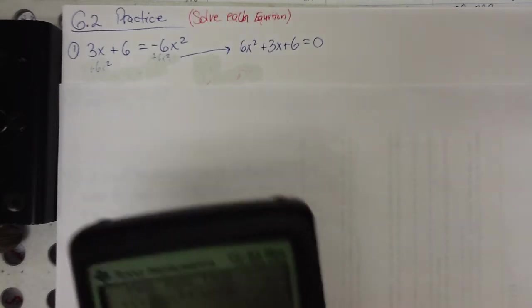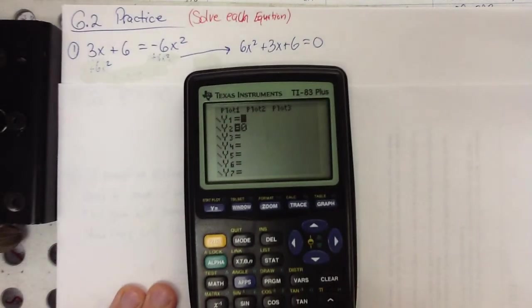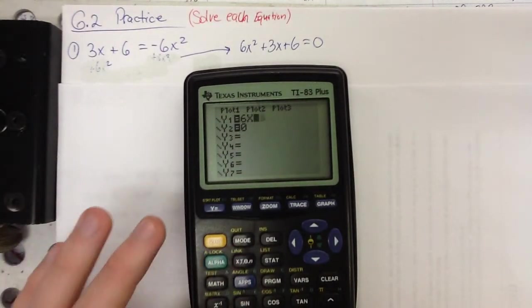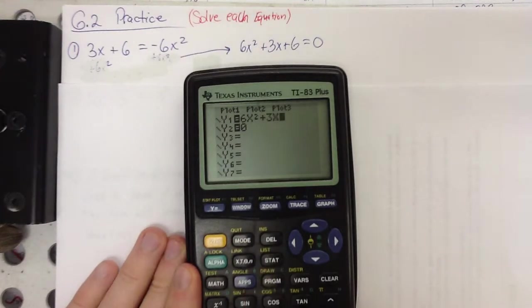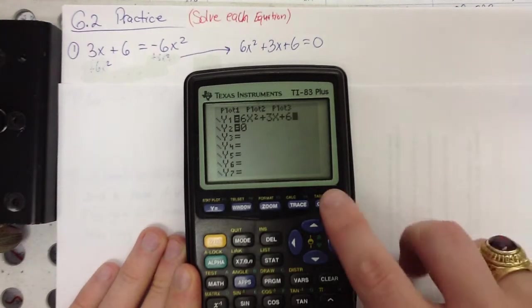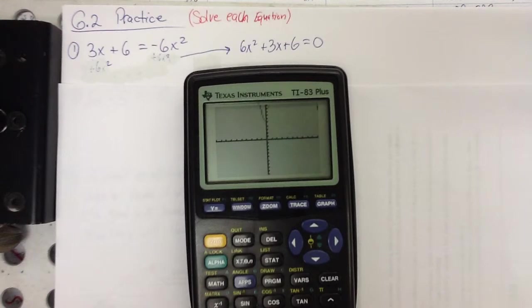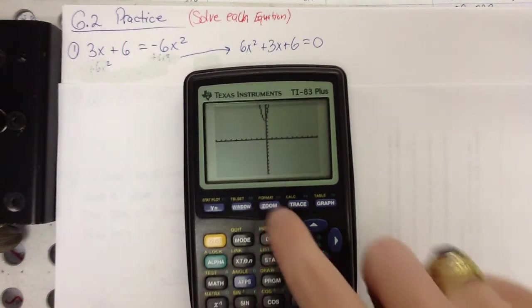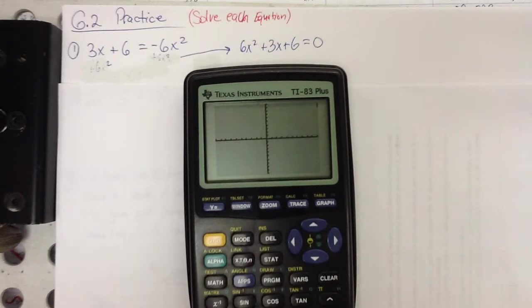So type it in, 6x squared plus 2x plus 6, hit graph. And if yours doesn't look like mine, it's probably because the last one you did was throwing something off a really tall building and we had to change our window. So zoom 6. If you don't learn anything else about the calculator, learn that zoom 6 fixes just about everything.